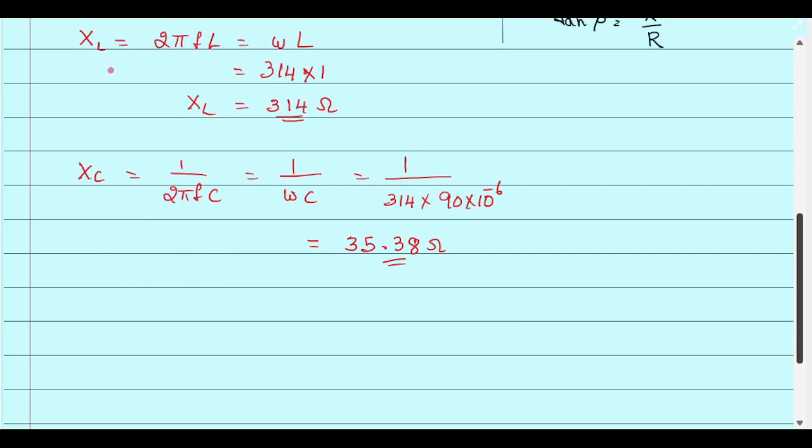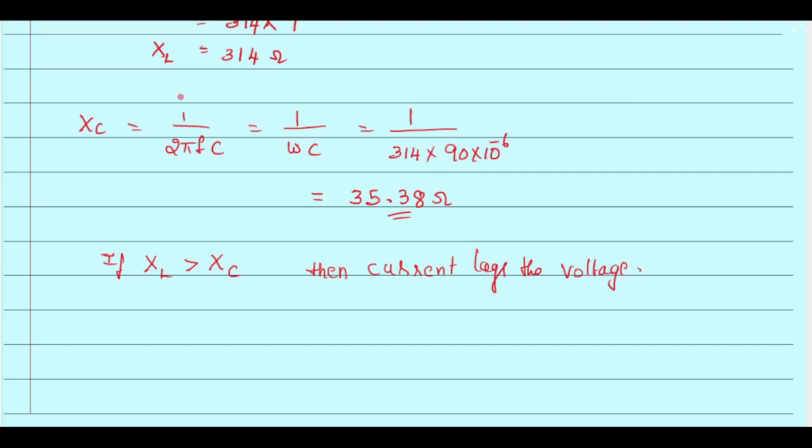Let us compare the values of XL and XC. If inductive reactance XL is greater than the capacitive reactance XC, then we can say that current lags the voltage. Here we can see that XL equal to 314 ohms and XC equal to 35.38 ohms. So your inductive reactance XL is greater than capacitive reactance, so the current lags the voltage.